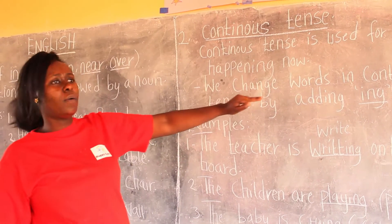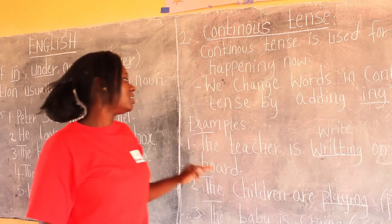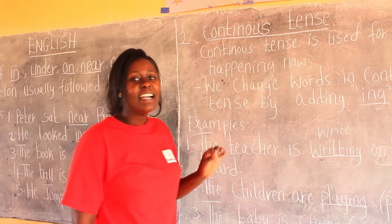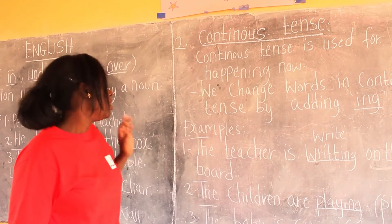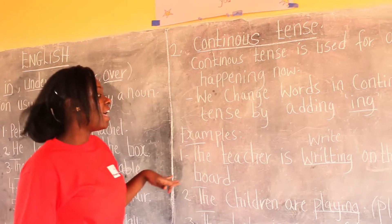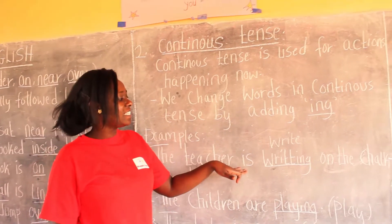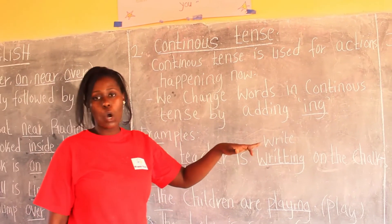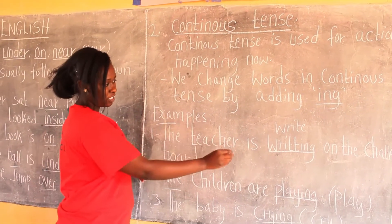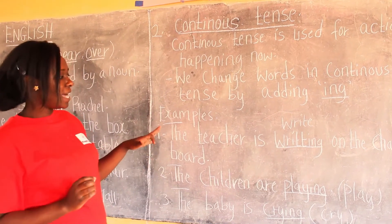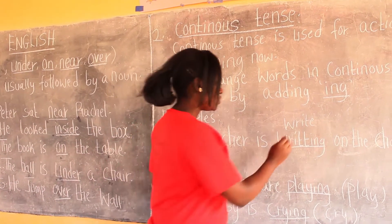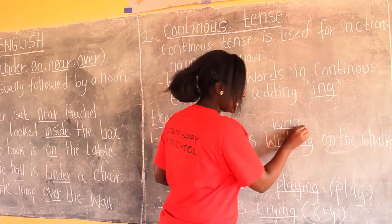We change the words in continuous tense by adding I-N-G. For example, we have these examples here. The teacher is writing on the chat book. I am writing on the chat book. Which word did I use? I used the word 'write.'